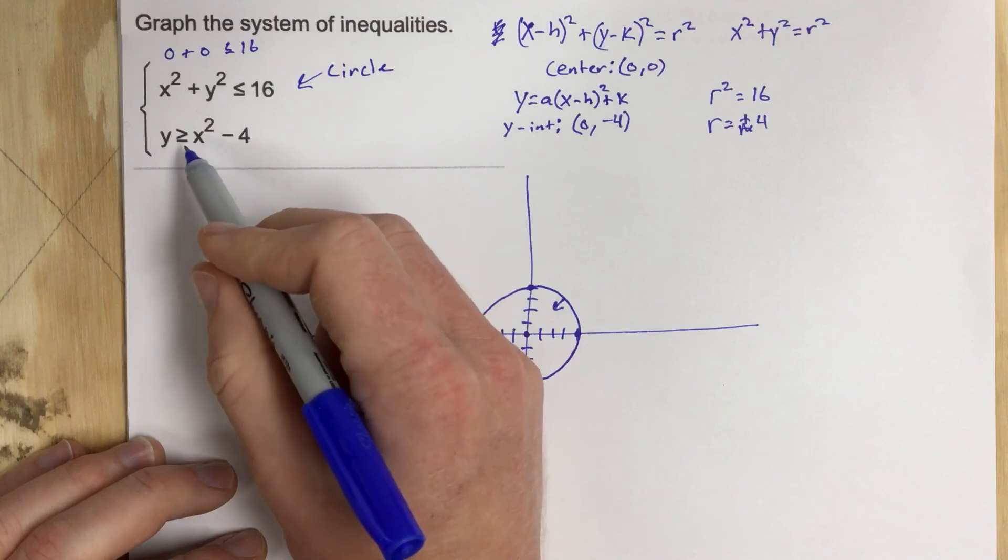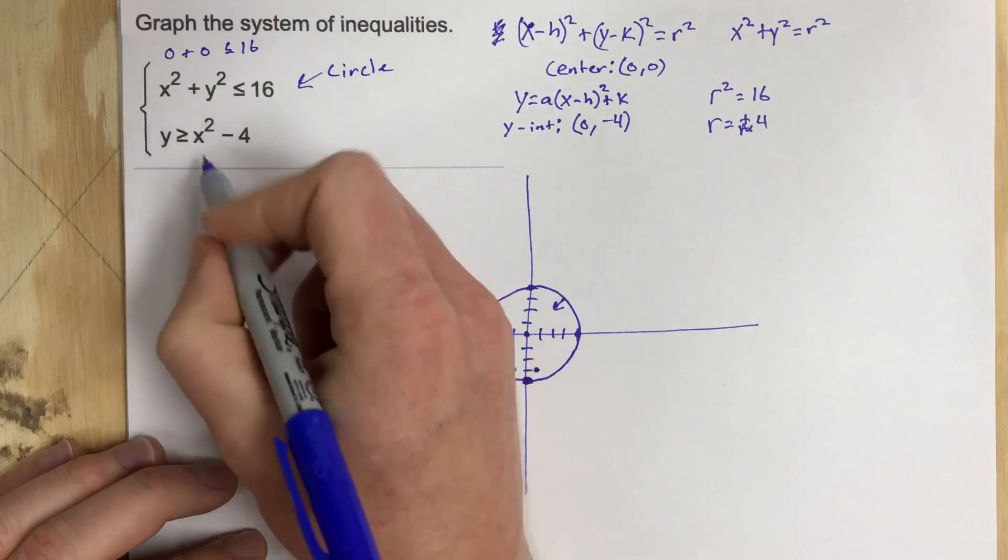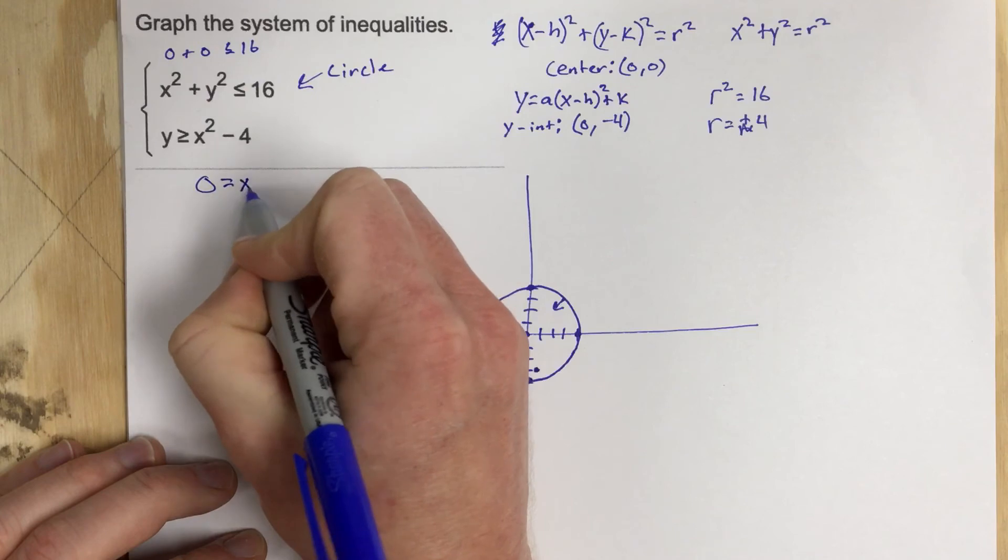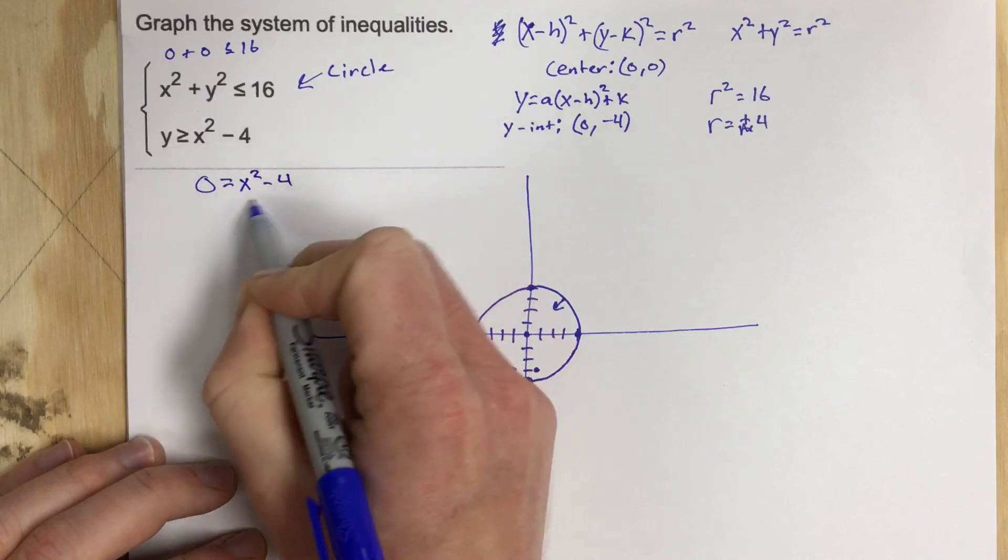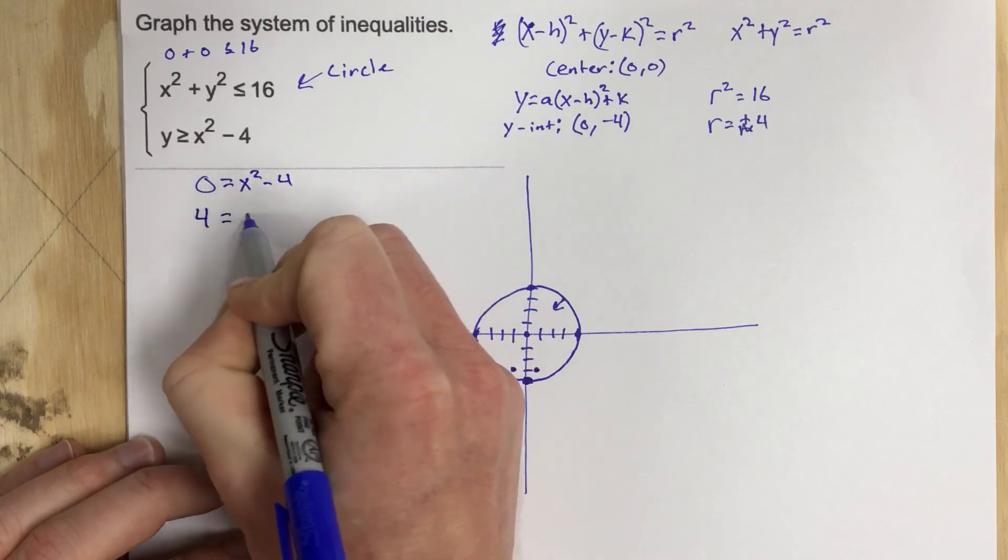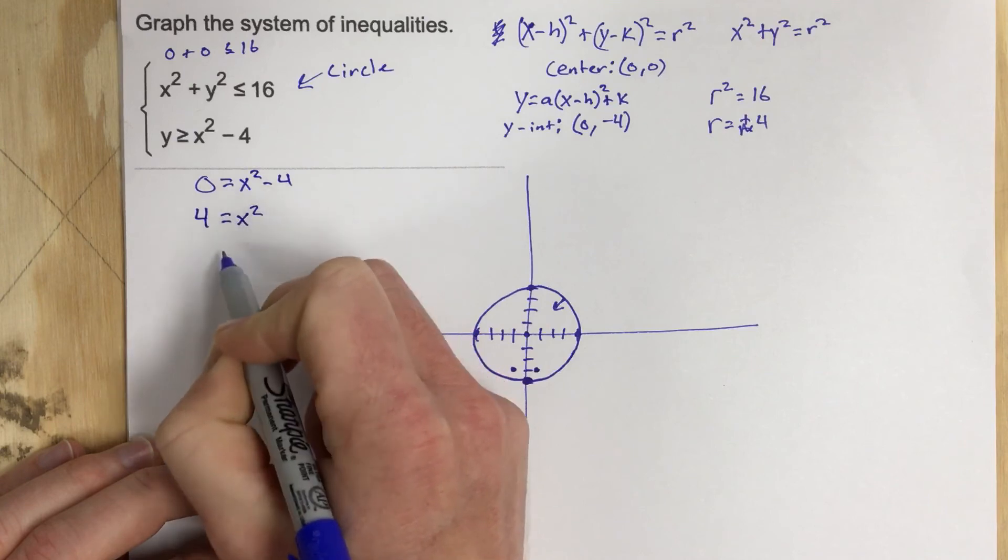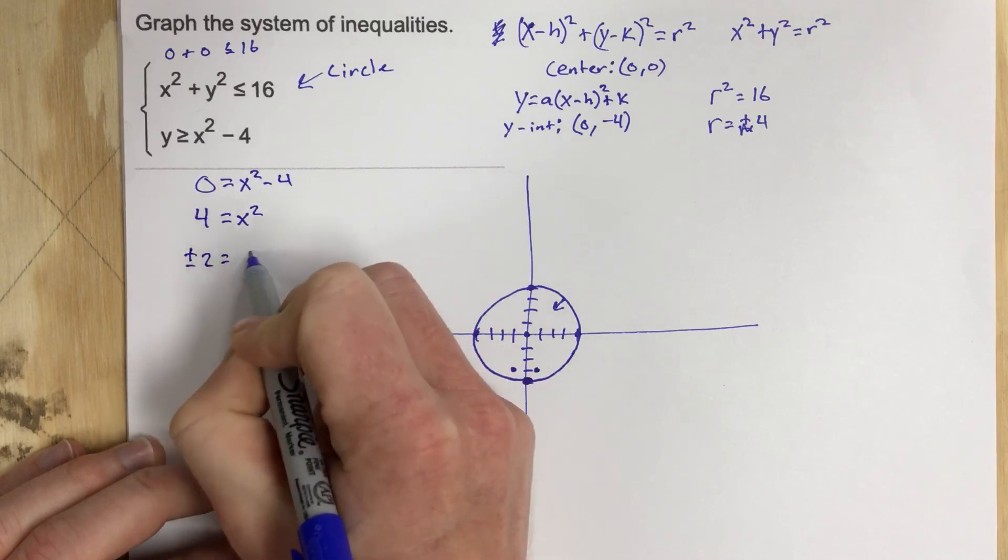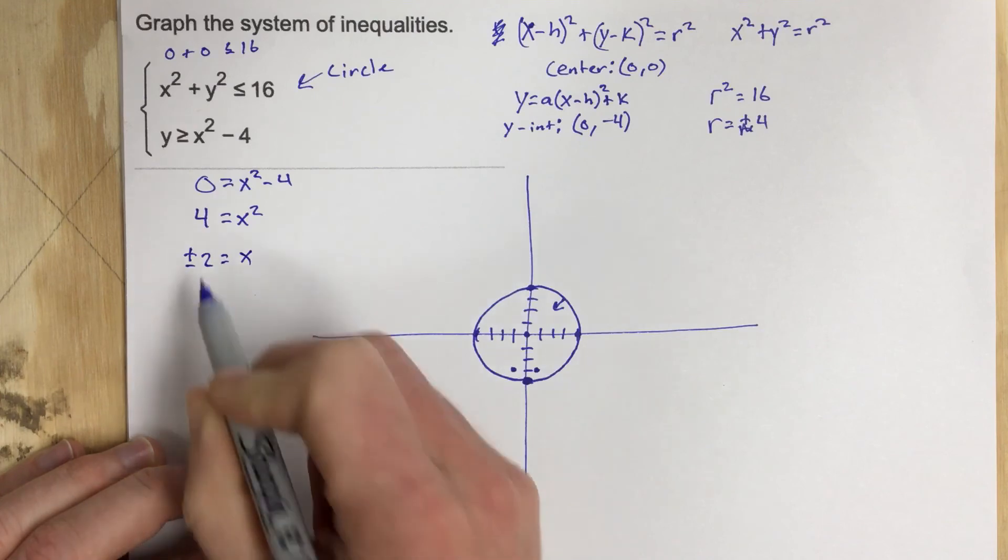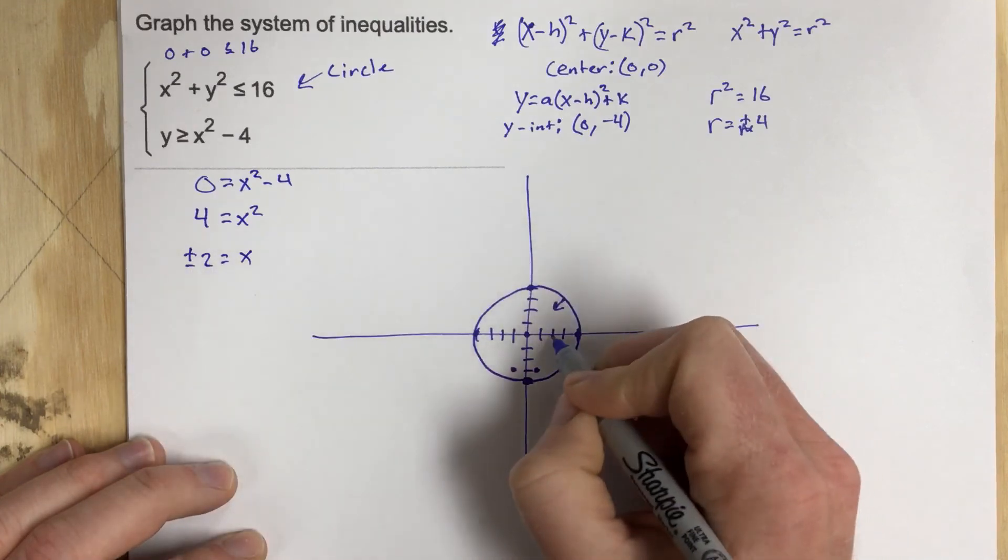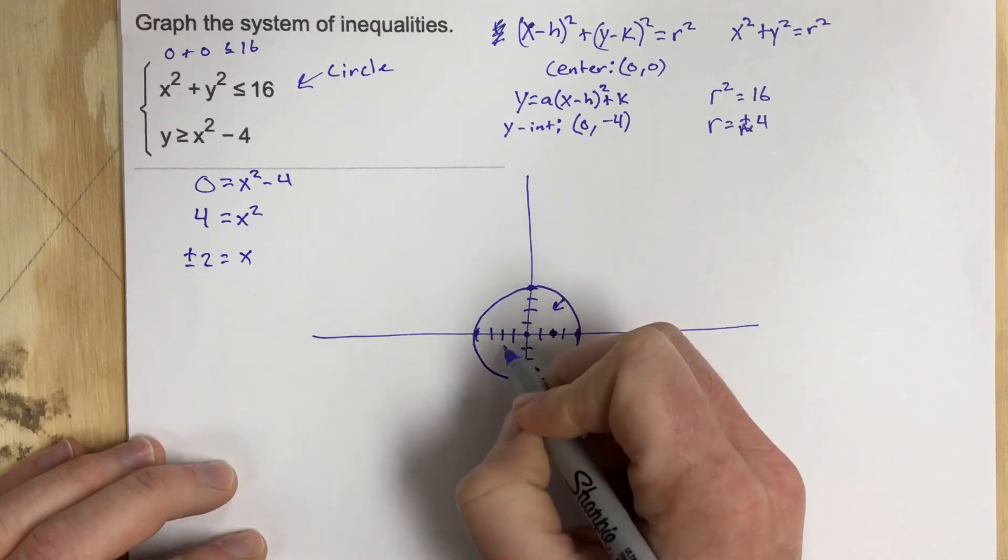So to find the x-intercepts, that's just finding roots, we set the equation equal to 0. So we say 0 equals x squared minus 4. Add the 4 over. We get 4 equals x squared. We square root each side. And we get plus and minus 2 equals x. So those are the x-intercepts. And I can mark 2 and negative 2.